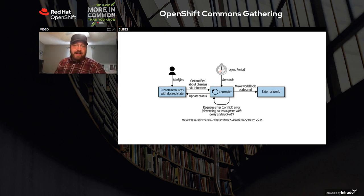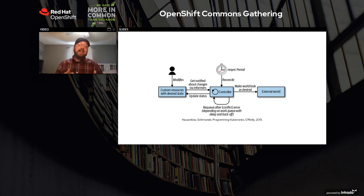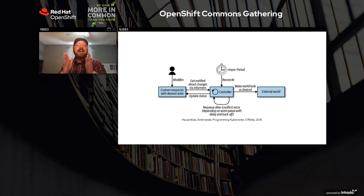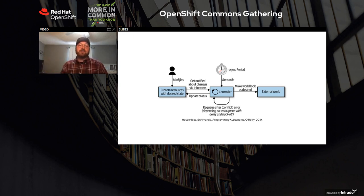Think of this combination of a custom controller with a set of custom resources that it watches, reacts to watch events, and takes actions to reconcile in the real world running on the cluster as the simplest definition of what a Kubernetes operator is. It looks like our usual reconciliation loop inside the Kubernetes control plane, and we provide a custom controller — executive code that knows how to watch, react to, and reconcile our specific custom resources.